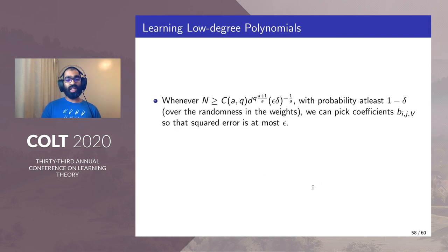Whenever n is at least ε^(-1/a) which is subpolynomial as a tends to infinity we can pick coefficients b_{i,j,v} so that the squared error is at most ε.